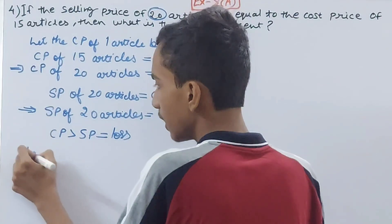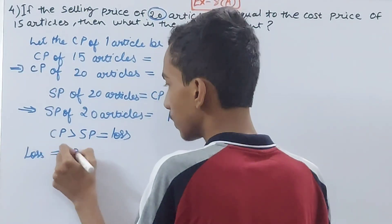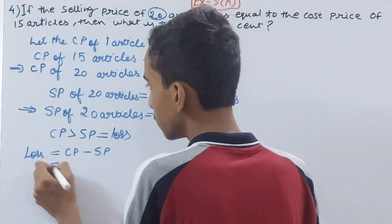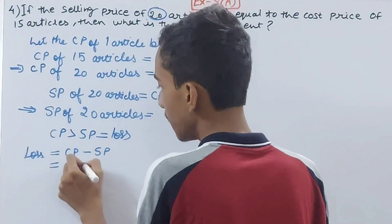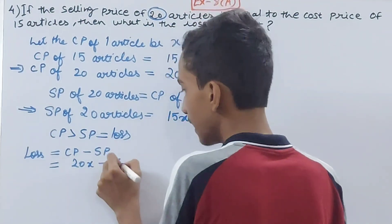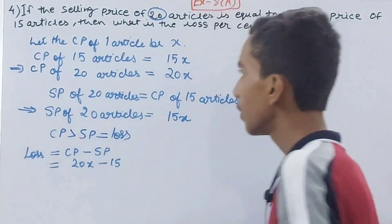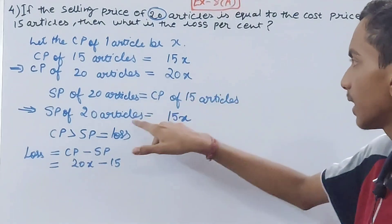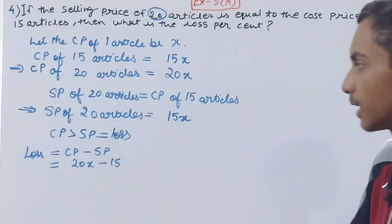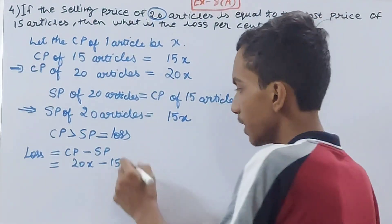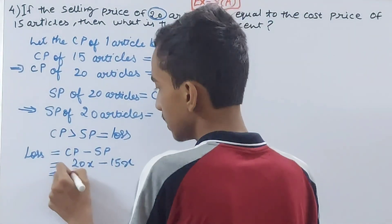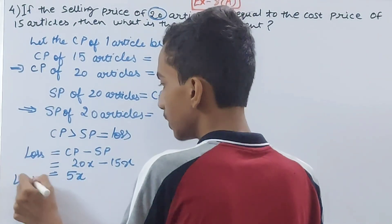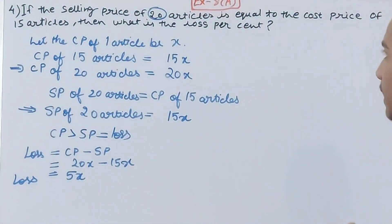Now we calculate the loss, that is cost price minus selling price. Cost price of 20 articles minus selling price of 20 articles: 20x minus 15x equals 5x. So the loss incurred is 5x.